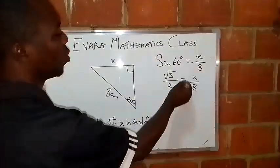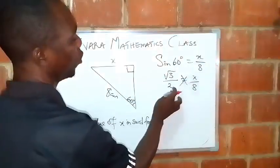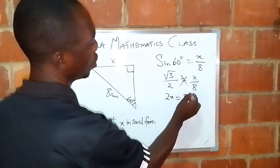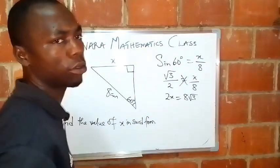Then you cross multiply. X will multiply 2, you have 2x. 8 will multiply root 3, that gives us 8 root 3.